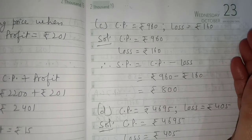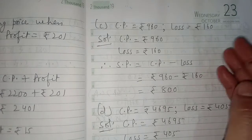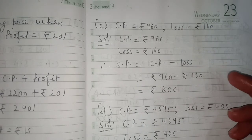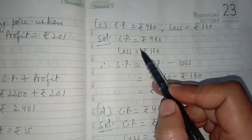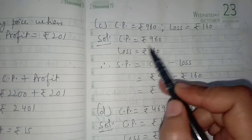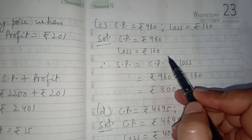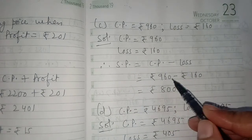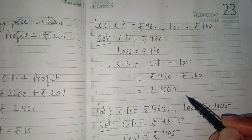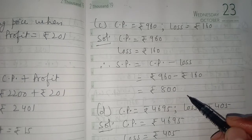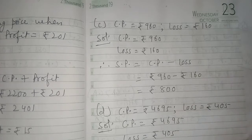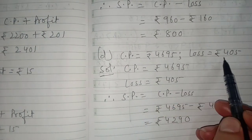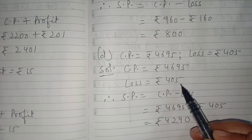Part c: CP and loss are given, so the formula is the opposite. In case of profit you add CP and profit; in case of loss you subtract. CP is rupees 960 and loss is rupees 160. Therefore SP equals CP minus loss. Putting the values and subtracting, you get rupees 800.